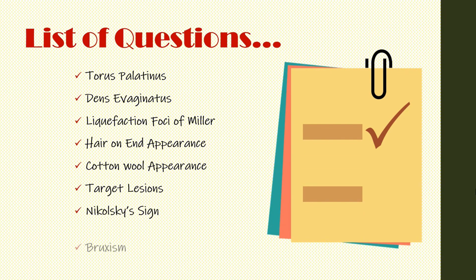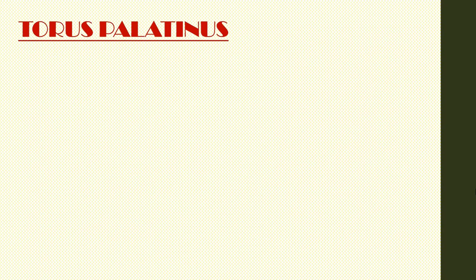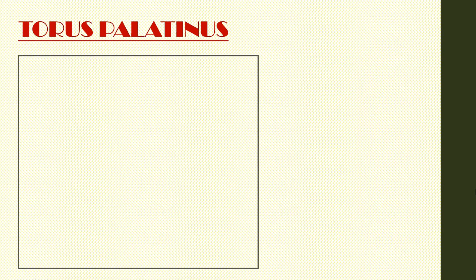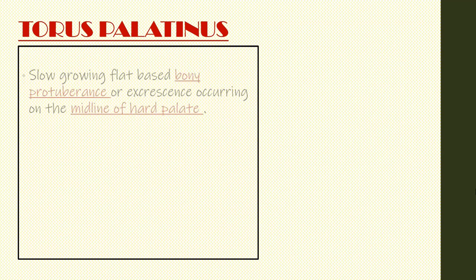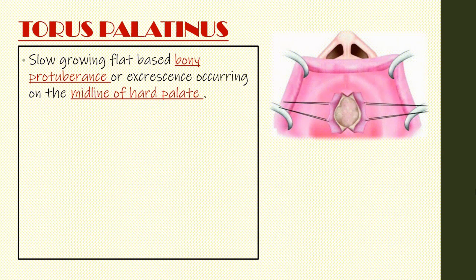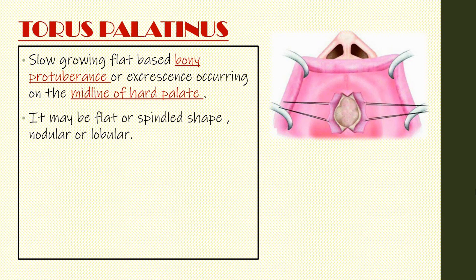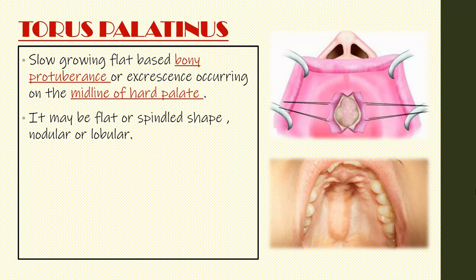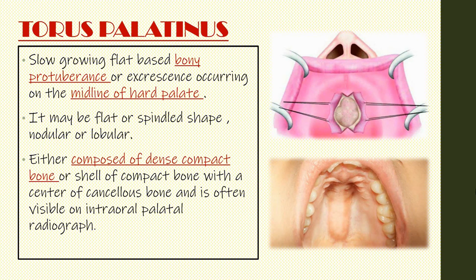Let's begin with the torus palatinus. It is a slow-growing, flat-based bony protuberance or excrescence occurring on the midline of the hard palate. It may be flat, spindle-shaped, nodular, or lobular. It is either composed of dense compact bone or a shell of compact bone with a center of cancellous bone.